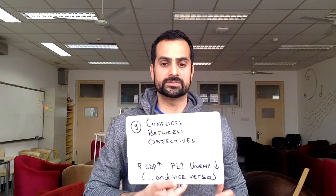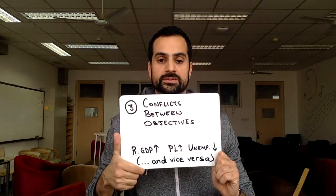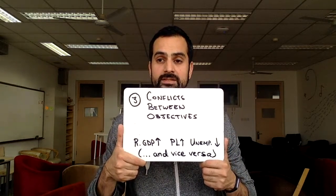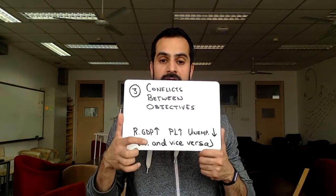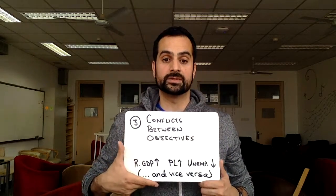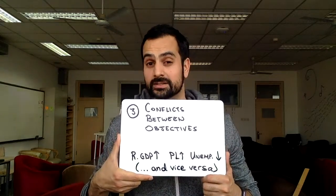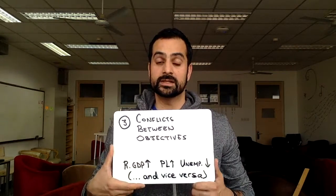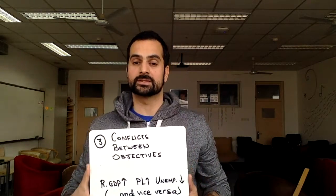The third thing is to consider the conflict between policy objectives. If you're trying to increase real GDP, that is going to also tend to increase the price level and decrease unemployment. There's a trade-off: real GDP goes up, inflation goes up, unemployment goes down. It also works the other way — if real GDP goes down, price level goes down, but unemployment goes up. So tackling inflation will require you to potentially increase unemployment. There are these conflicts the government needs to be aware of. These are three key factors to think about when you're evaluating, but they're not the only ones. If you know these three, you're in good shape.